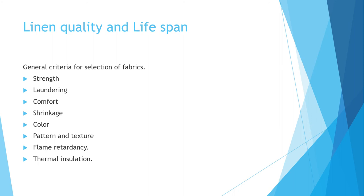The third criterion is comfort — the feel for the guest and staff using the linen during bed making, towel folding, or restaurant linen work. There should be no pinching sensation or discomfort. Comfort plays a vital role in fabric selection. Fourth is shrinkage: one percent or less shrinkage is common in linens and cottons, but the fabric should not shrink more than one percent, which would reduce the size of the bed sheet.